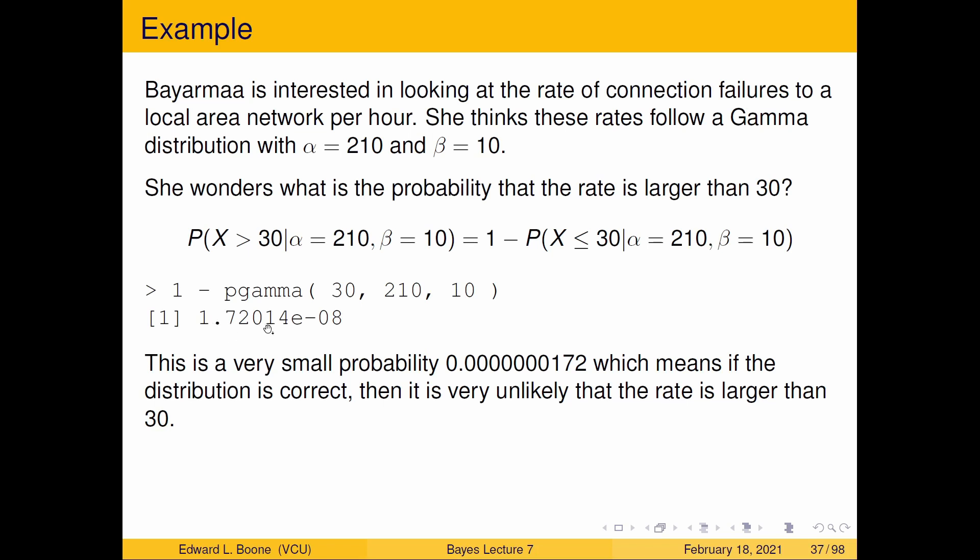And you can see this probability is really small. It's 1.72 times 10 to the negative 8, which, if you wanted to see what it looked like written down, this is what it would look like. So, if the distribution's correct, then it's very unlikely that this rate is larger than 30.